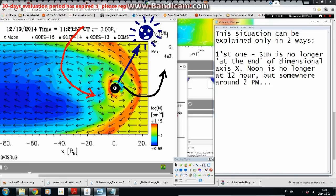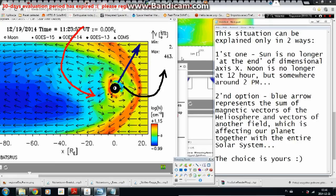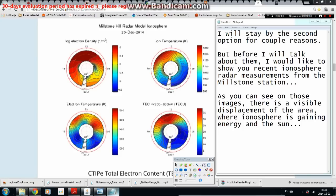First one: Sun is no longer at the end of dimensional axis X. Noon is no longer at 12 hour but somewhere around 2 pm. Second option: Blue arrow represents the sum of magnetic vectors of the heliosphere and vectors of another field which is affecting our planet together with the entire solar system. The choice is yours. I will stay by the second option for couple reasons.